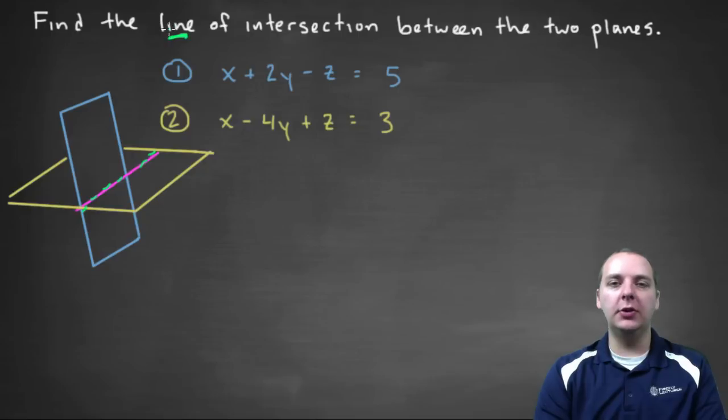So that's what we're going to try to do. So we're going to try to find a set of three equations, x and y and z, in terms of a parameter t that represents this pink line right here. Right now, how are we going to make that happen? How does that work exactly?